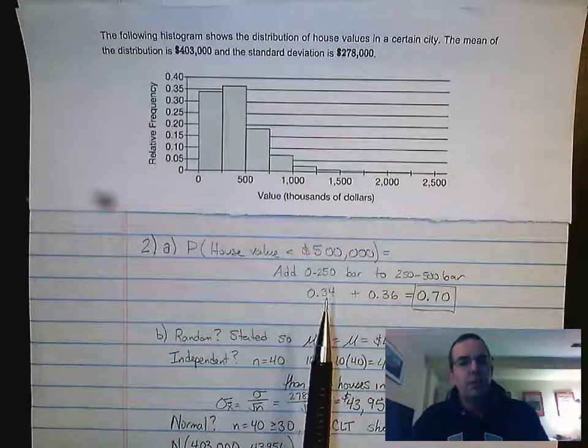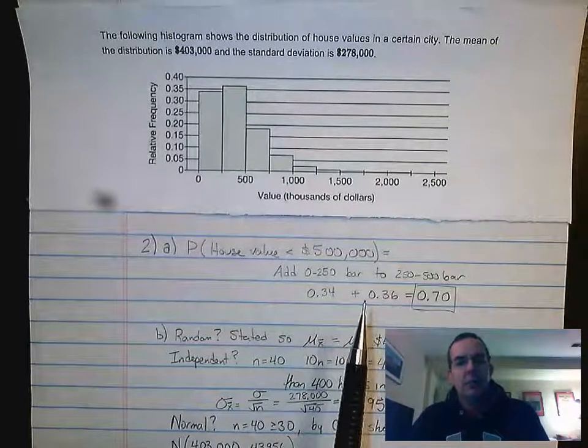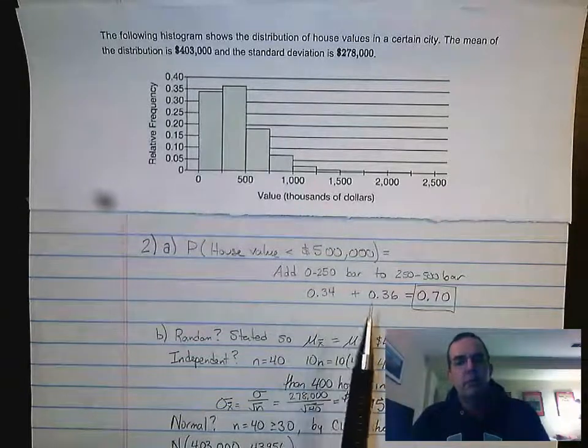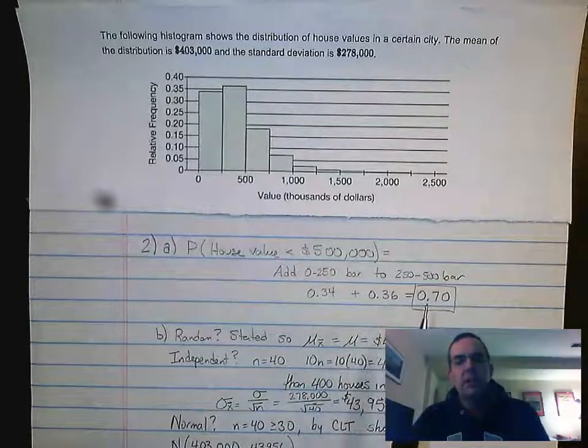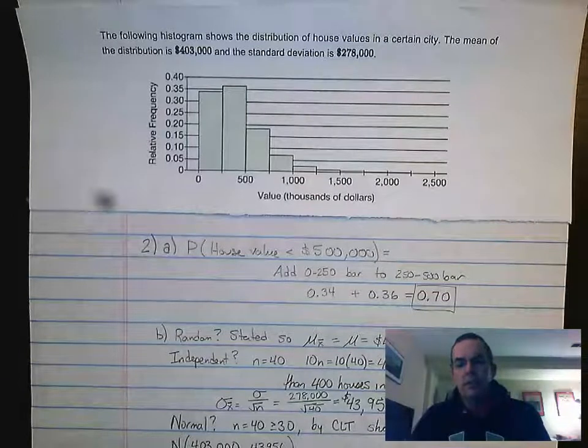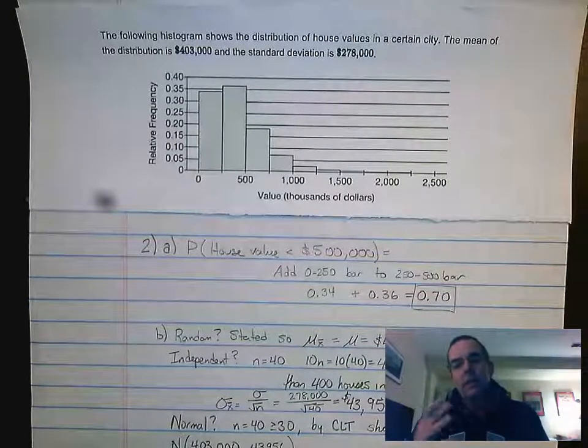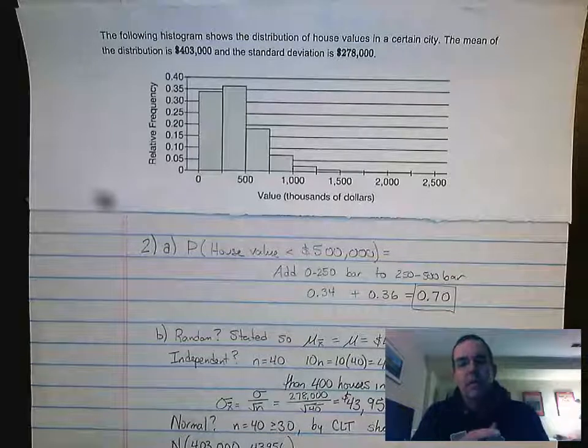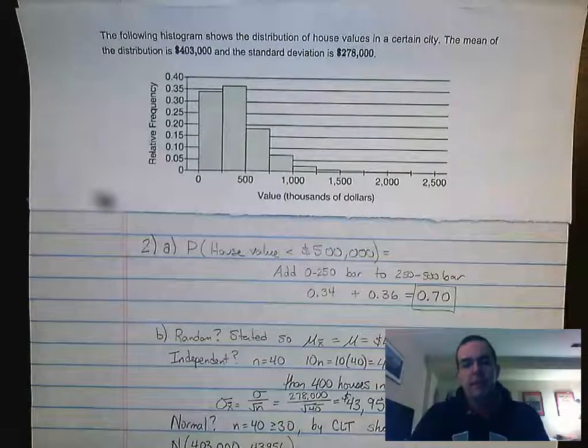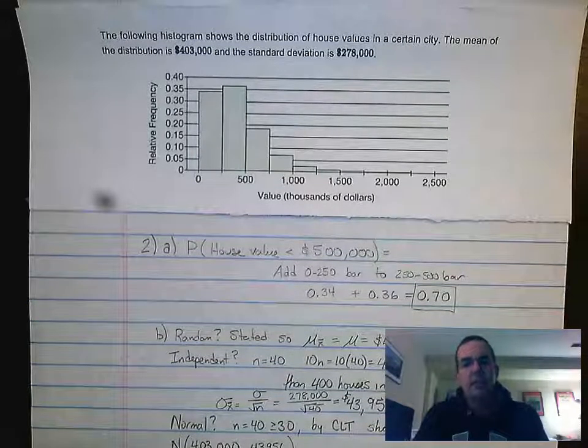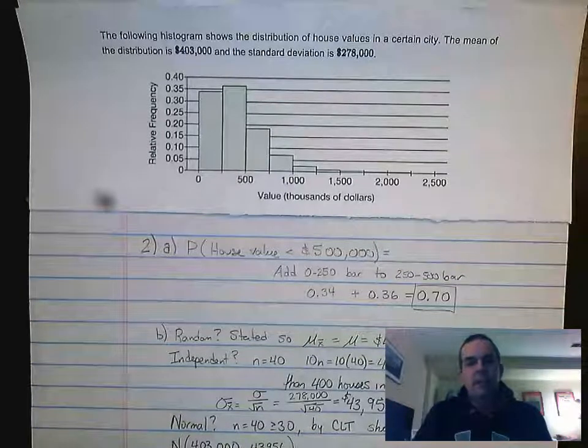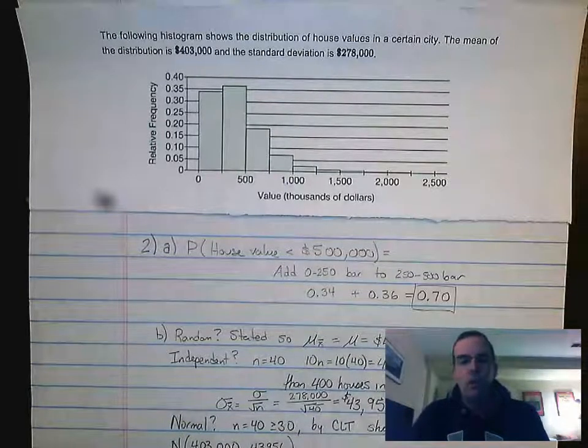So in this case, I think the first bar is 0.34. I think the second bar is 0.36. 0.34 plus 0.36 gives me 0.7. So this is the probability that if I were to select one house randomly, what would be the probability that house would be valued less than $500,000. So this is that 0.7, and we'd need to show the work with the addition.